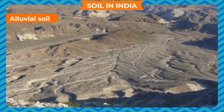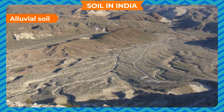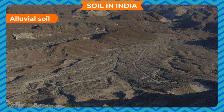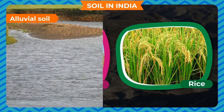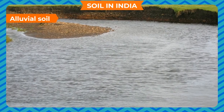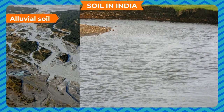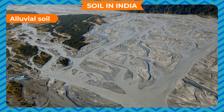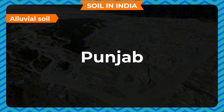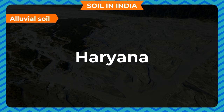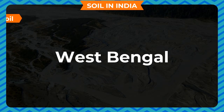Alluvial soil is very fertile and best suited for the growth of wheat and rice. It is made rich by the alluvium deposited by rivers. This soil is found in the northern plains, mainly in the states of Punjab, Haryana, Uttar Pradesh, Bihar and West Bengal.